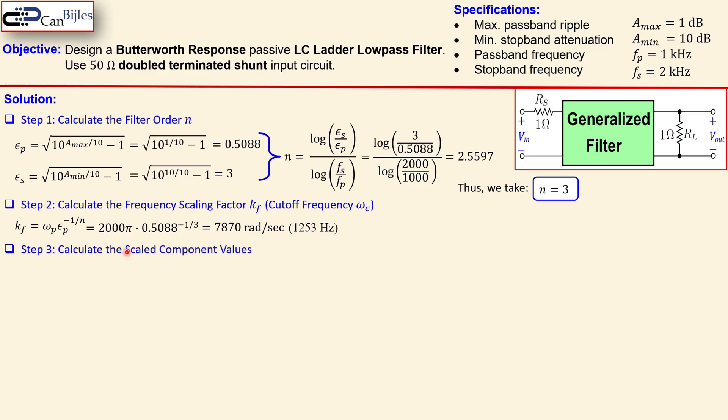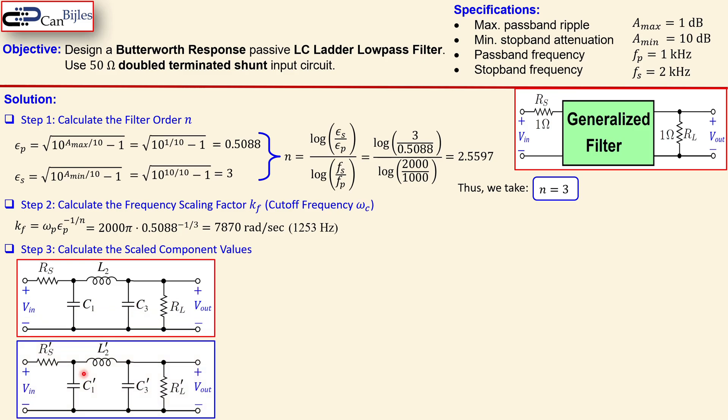Step 3, we need to calculate now the scaled component values and we also see that, so that in the first example, this part here in the middle with the C1, L2 and C3, that is our generalized circuit which is also our low pass filter. The R_s here and R_L are the two components here which is then the double terminated shunting configuration and this is the standard circuit for this low pass filter.